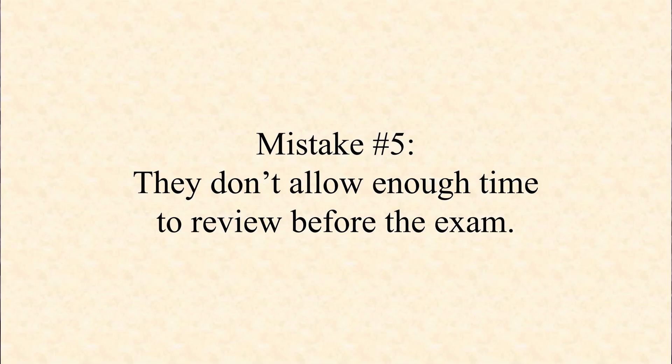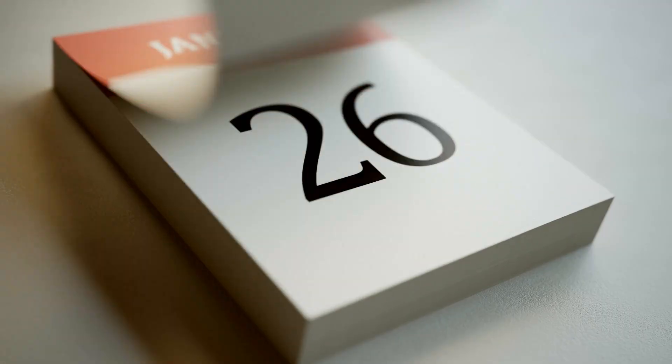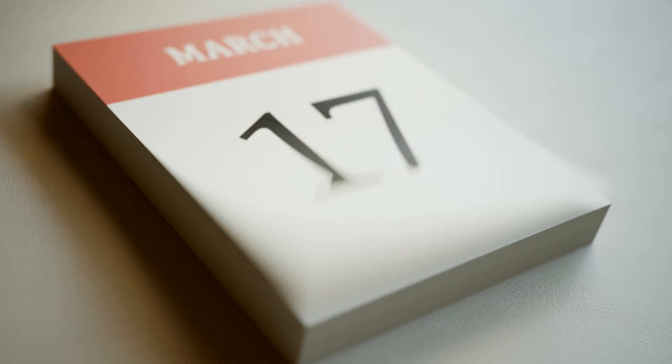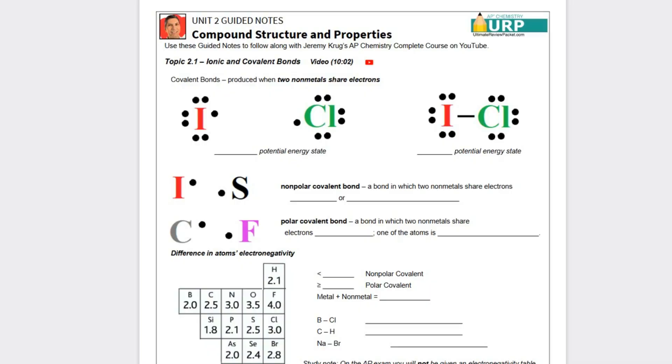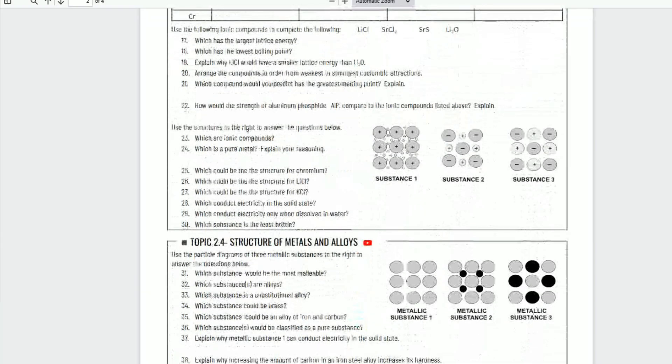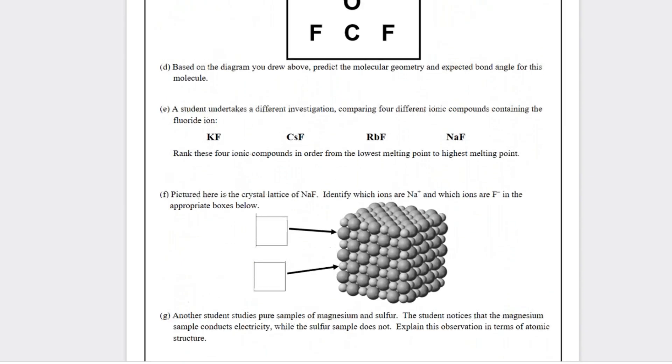And now for the fifth mistake made by AP Chemistry teachers: a lot of teachers don't allow enough time to review before the exam. Remember, the AP exam is the first full week in May, and some teachers struggle to complete the curriculum, literally racing across the finish line and finishing unit nine just a couple of days before the exam with little to no review. Don't make that mistake. Try to finish unit nine and the entire course material by about the first week in April if at all possible. That way you can devote the last three or four weeks before the AP exam to review. And if you're looking for the best AP Chemistry review resource out there, check out my Ultimate Review Packet. It has review resources for every single one of those nine units as well as two full AP practice exams in the digital AP exam simulator.